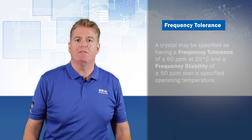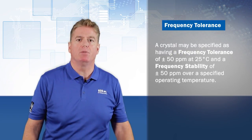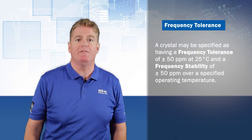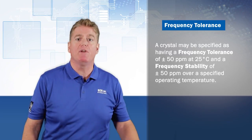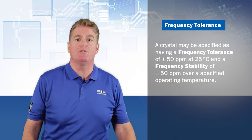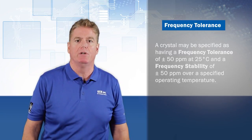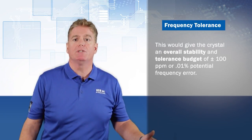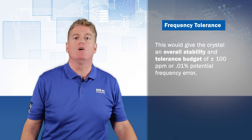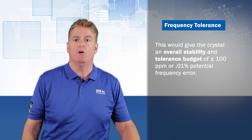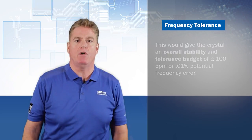For instance, a crystal may be specified as having a frequency tolerance of plus and minus 50 parts per million at 25 degrees Celsius, and a frequency stability of plus or minus 50 parts per million over a specified operating temperature. This would give the crystal an overall stability and tolerance budget of plus or minus 100 parts per million, or 0.01% potential frequency error.